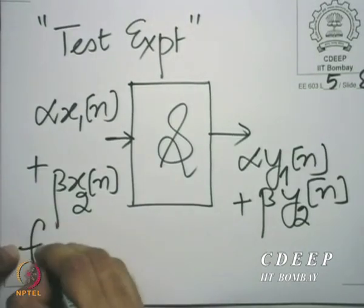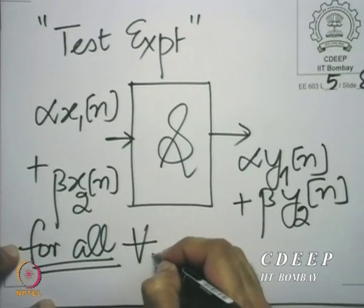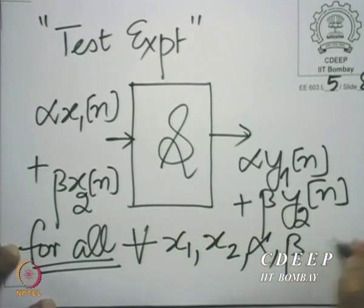I bring in this notation to denote 'for all': for all x1, x2, alpha, beta. Alpha and beta are in general complex constants. x1[n] and x2[n] are in general complex sequences. We know why we have to allow for complex sequences — we have agreed to use rotating complex numbers in place of sine waves. So I must allow for complex sequences, and if I am allowing complex sequences, I must also allow complex constants. Needless to say, real sequences or real constants are a special case.